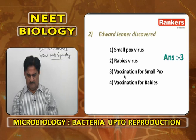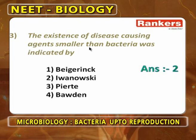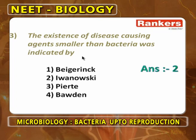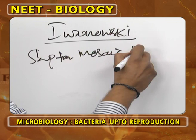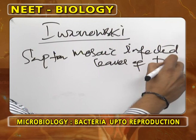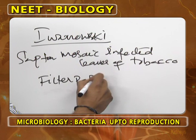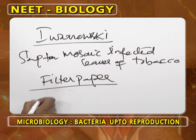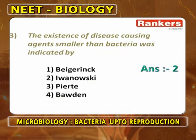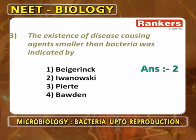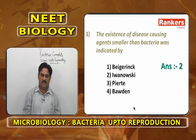The existence of disease-causing organisms smaller than bacteria was indicated by Ivanovski. He took the sap of mosaic-infected leaves of tobacco and allowed it to pass through a filter paper with minute pores through which even bacteria cannot pass. Since the particles in the sap passed through, he called them 'filterable agents.'